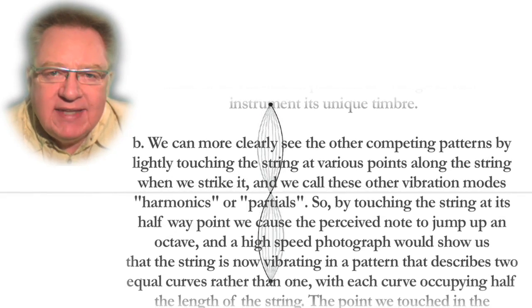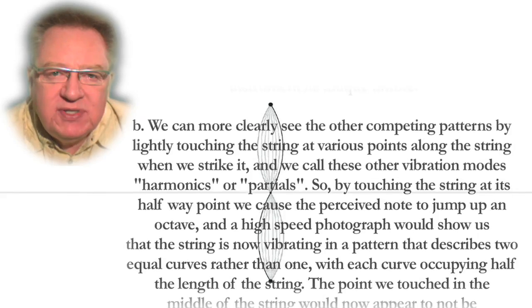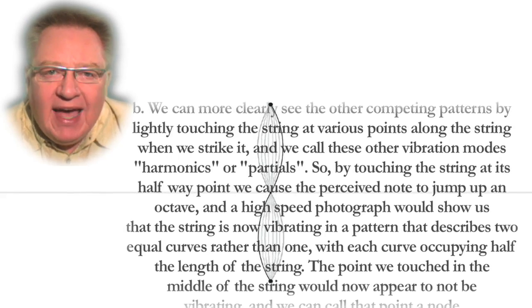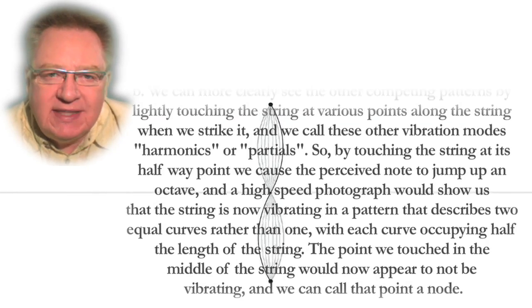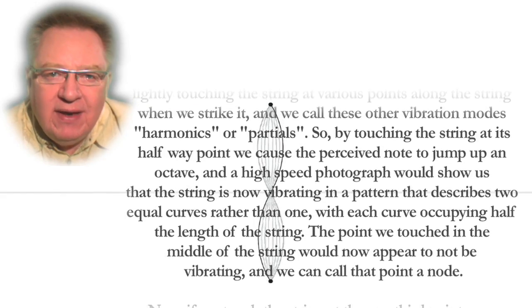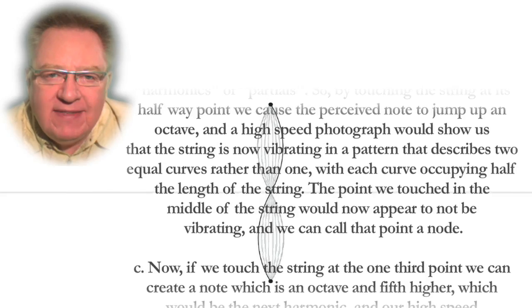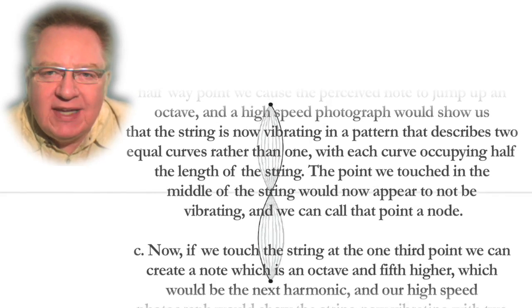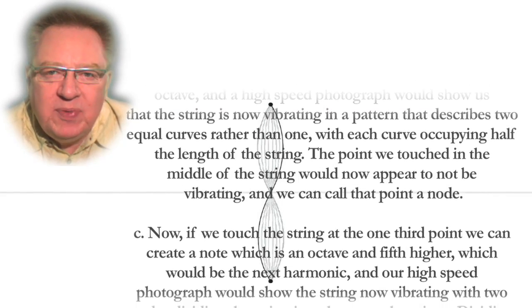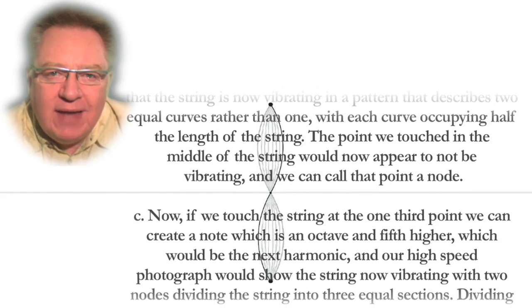Diagram B. We can more clearly see the other competing patterns by lightly touching the string at various points along the string when we strike it. And we call those other vibration modes harmonics or partials. So, by touching the string at its halfway point, we cause the perceived note to jump up an octave. And a high-speed photograph would show us that the string is now vibrating in a pattern that describes two equal curves rather than one, with each curve occupying half the length of the string. The point we touched in the middle of the string would now appear to not be vibrating, and we call that point a node.